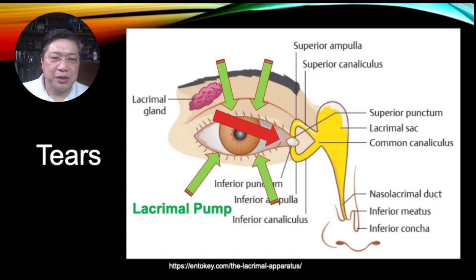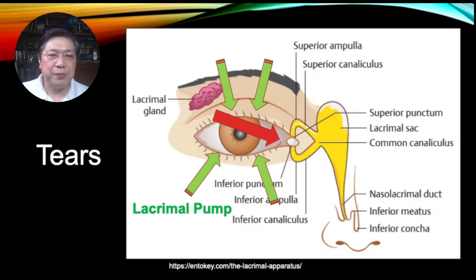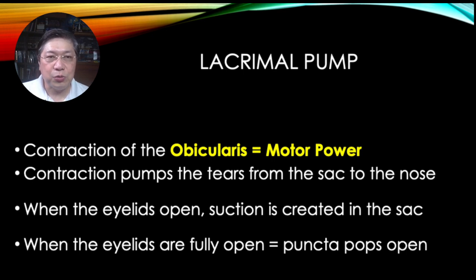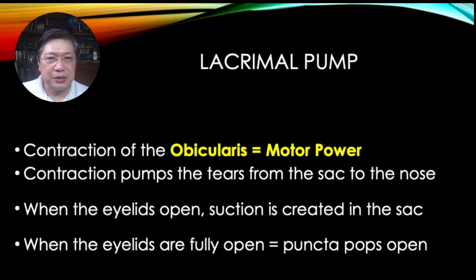How does it get from the lacrimal gland to the drainage area? It is driven there by the lacrimal pump — an intrinsic component of your tear flow, powered by the main muscle of your eyelids, the orbicularis, which is the muscle tasked with closing your eyes. The orbicularis produces the motor power for the lacrimal pump. A contraction of this muscle pushes the tears from the sac to the nose.